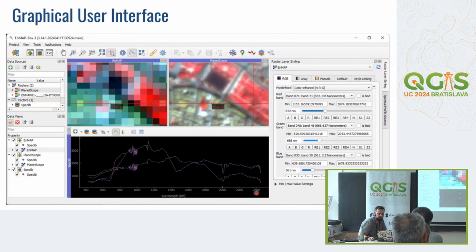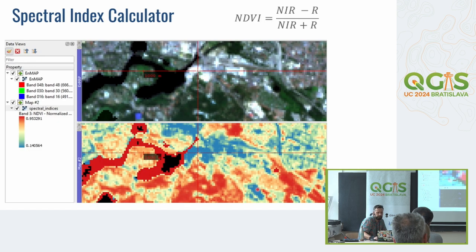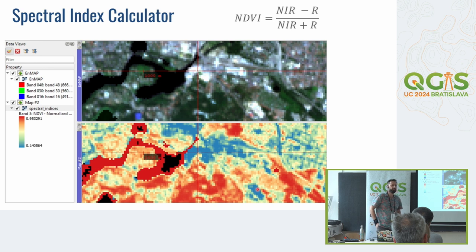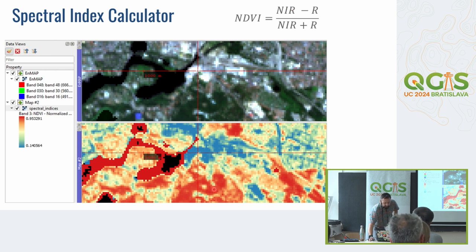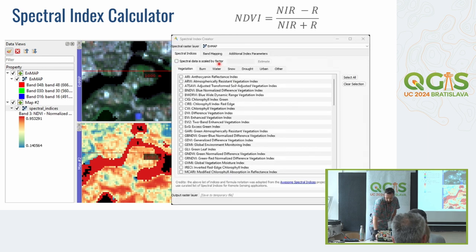You can use the EnMAP Box to calculate spectral indices like the Normalized Difference Vegetation Index (NDVI), a very common index in vegetation analysis. You select a band from the near-infrared and a band from the red light, perform the calculation, and get a single-band image where high NDVI values are correlated with vegetation and low NDVI values with areas without vegetation. We also support more than 100 other spectral indices.